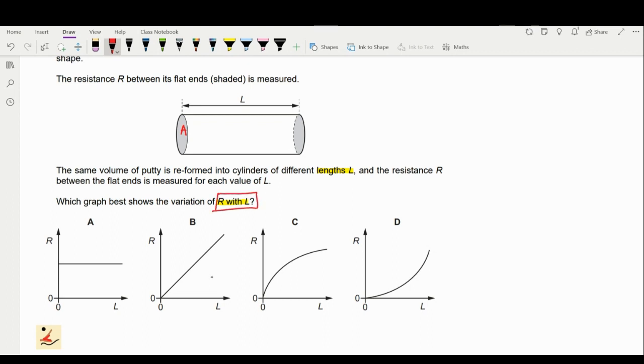We're going to find out what is the variation between R and L. We're going to look into different equations and find out the final equation relating the resistance and length.